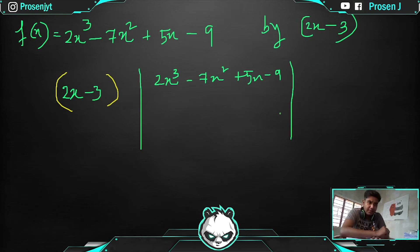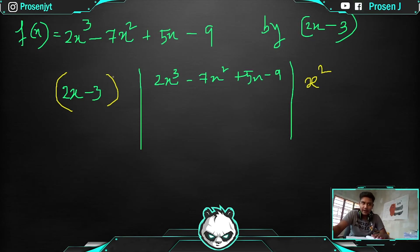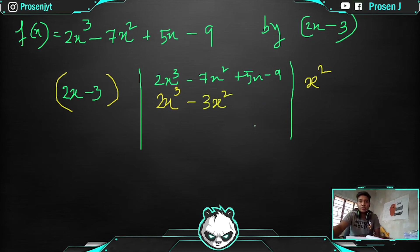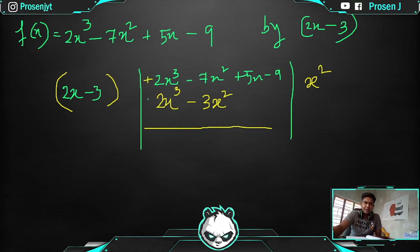To make 2x³, you need to multiply x² with the divisor 2x − 3. So multiply x² with the entire value: that gives 2x³ from the first term, and −3x² from the second term. Now there must be a subtraction, so both 2x³ terms cancel to zero.